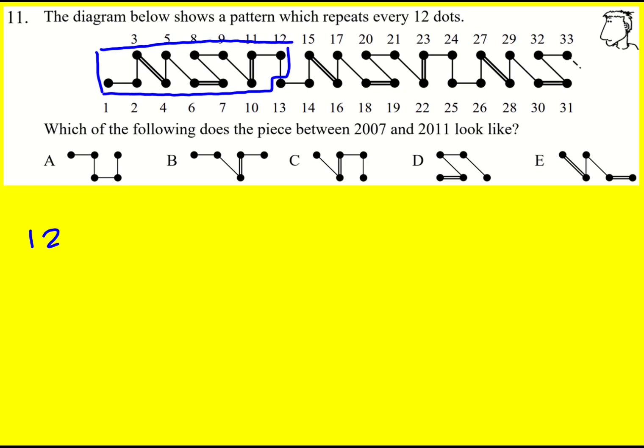So if I do 12s into 2007, I can work out how many complete patterns I have. If I get a remainder of 0, so it goes into it entirely, then I'll have a complete number of patterns and the 2007th would actually be this final dot. If I get a remainder of 2, then it would be this dot, for example.